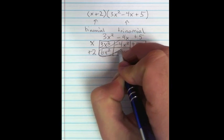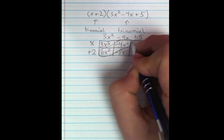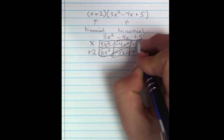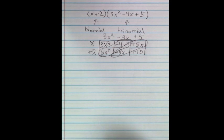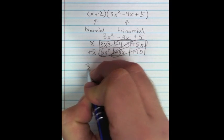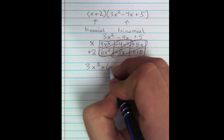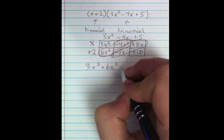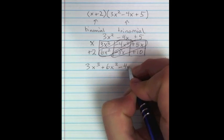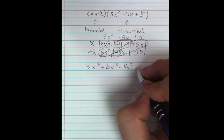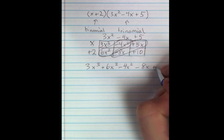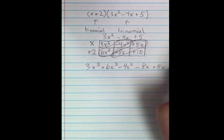Now what we know is that the 6x squared and the negative 4x squared can be combined because they are like terms. And also the negative 8x and the positive 5x can be combined because they are also like terms. So we're going to end up with 3x to the third plus 6x squared minus 4x squared minus 8x plus 5x and plus 10.